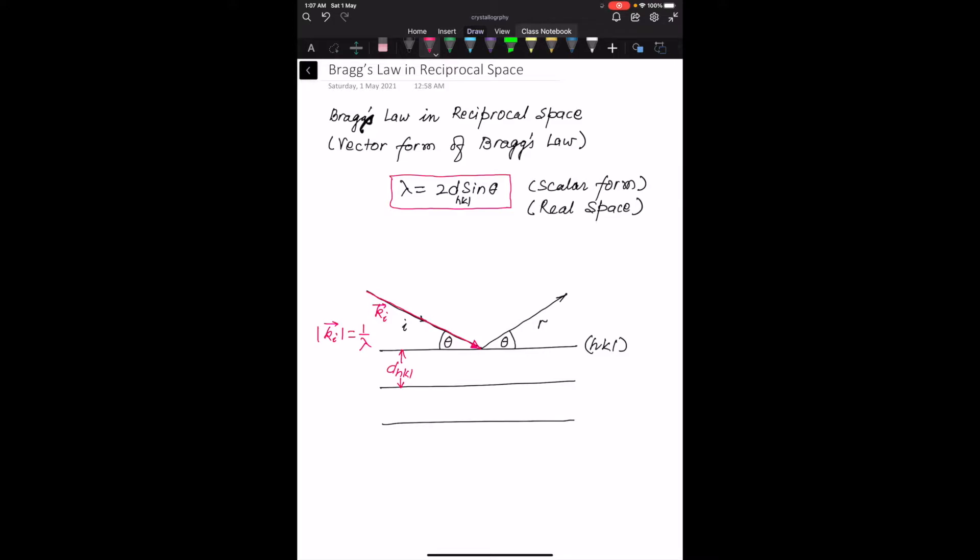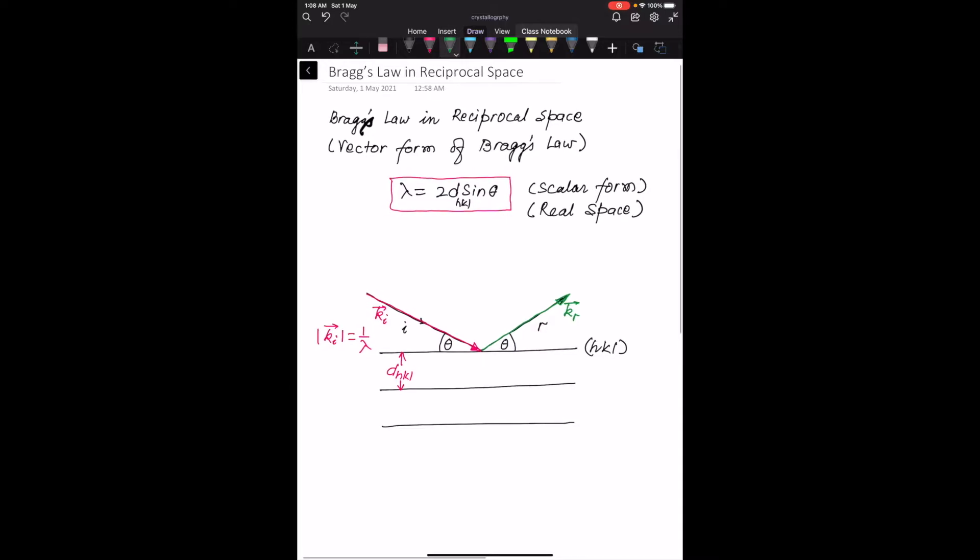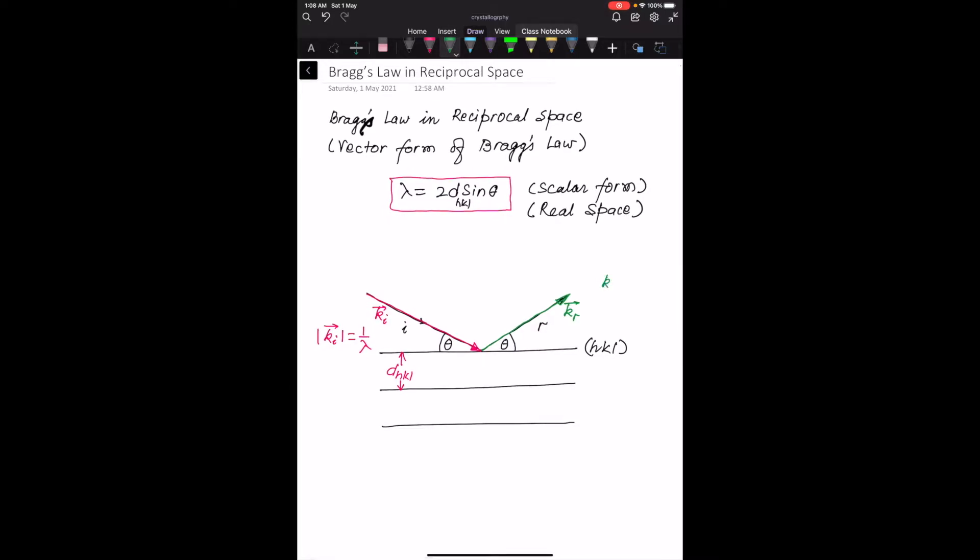Similarly, you have the reflected wave vector, let us call that Kr. Since in Bragg's law we are considering elastic scattering, the two wavelengths are equal. So the length of these two wave vectors are also equal. The mod of Kr is also equal to 1 by lambda.